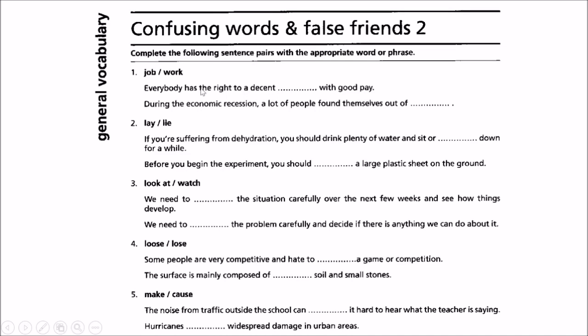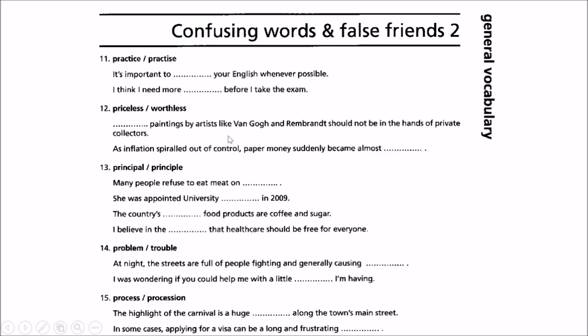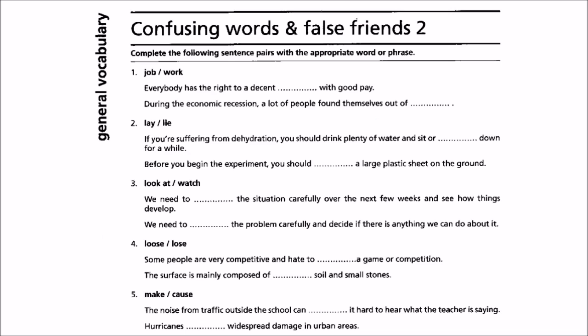Our discussion was about confusing words and false friends, and we are going to see some of these. Let us start. First of all, we have to complete the sentences. There are two sentences — or you can say a pair of sentences — and we have to add the appropriate word or phrase.